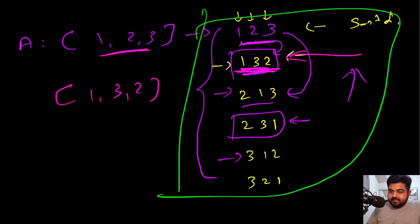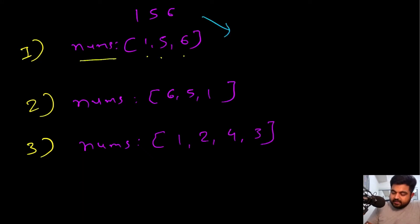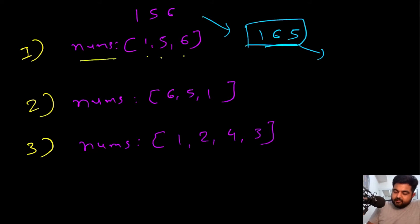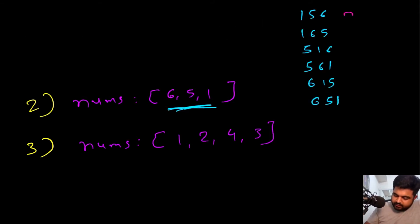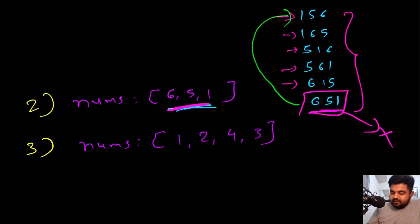Let's see some examples to understand what the problem is asking. If we are given the array 1, 5, 6, lexicographically the next value in line should be 1, 6, 5. Now for the tricky case: if we are given 6, 5, 1, this is already the maximum possible value, so there is no next permutation. In that case, we return the smallest possible value, which is 1, 5, 6.